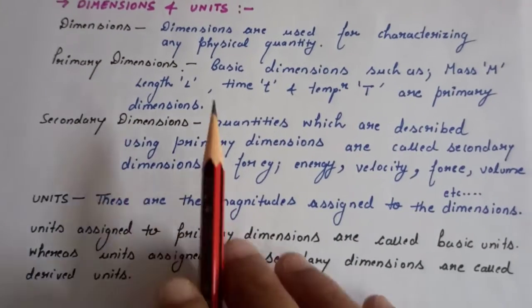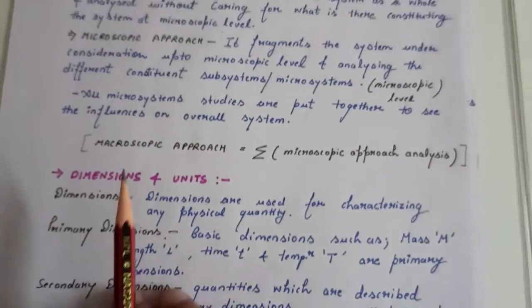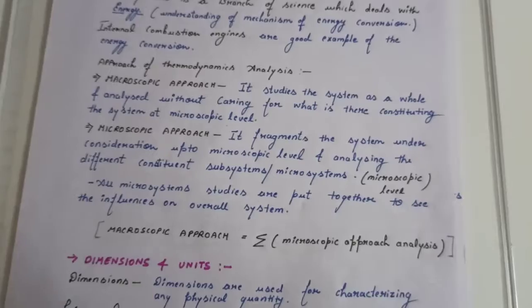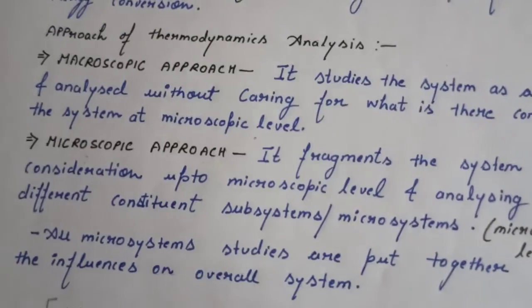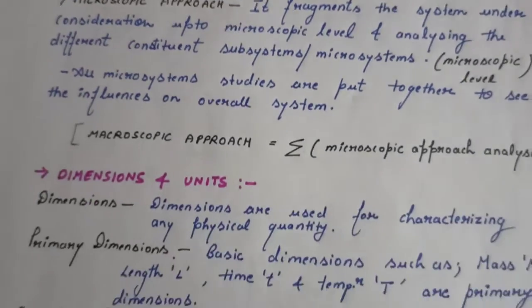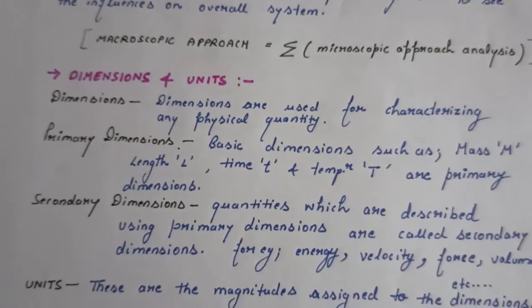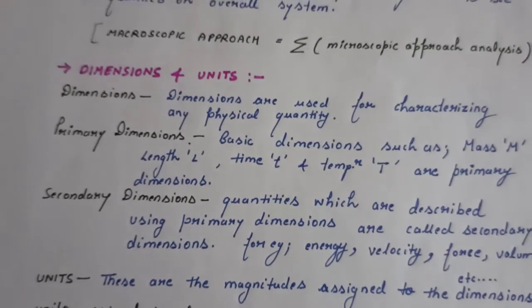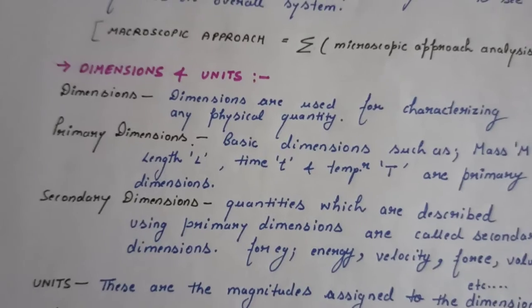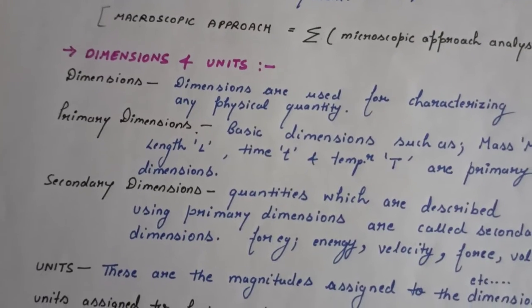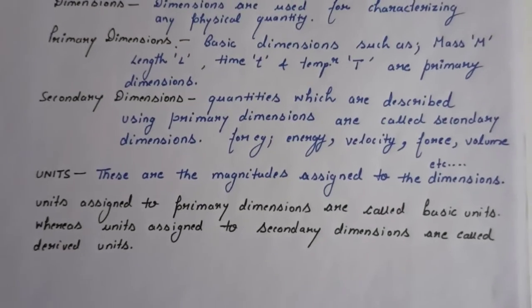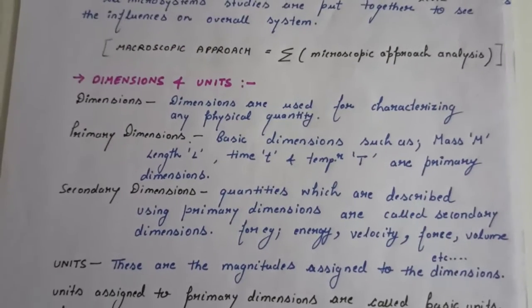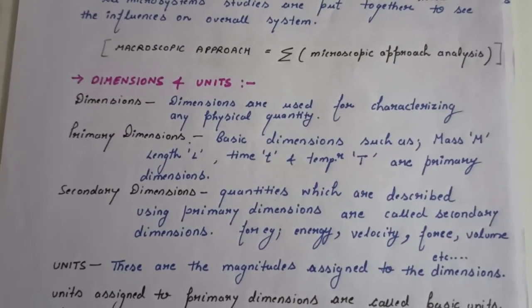So this was the basics of what is thermodynamics and what are the approaches. There are two approaches: microscopic approach and macroscopic approach. And then we have dimensions, which are classified into two categories: primary dimensions and secondary dimensions. In the next video we will study about the units related to the thermodynamics system. I hope this video was useful. Thanks for watching.